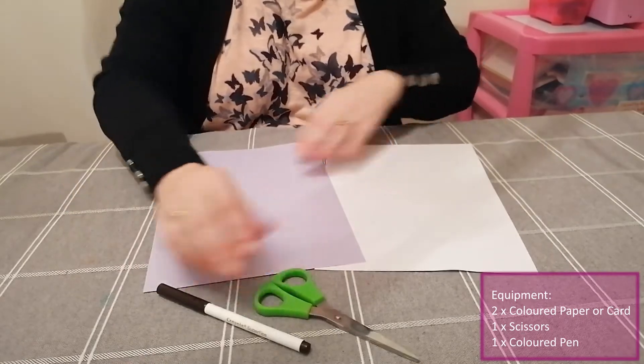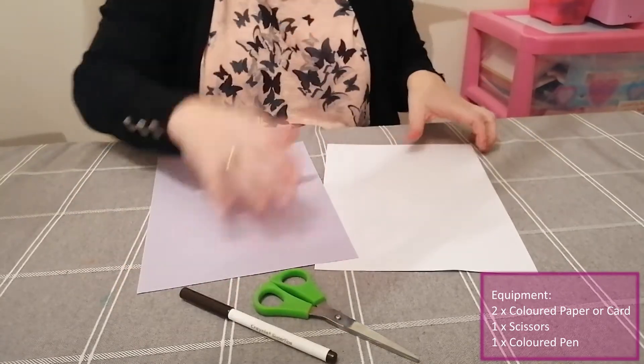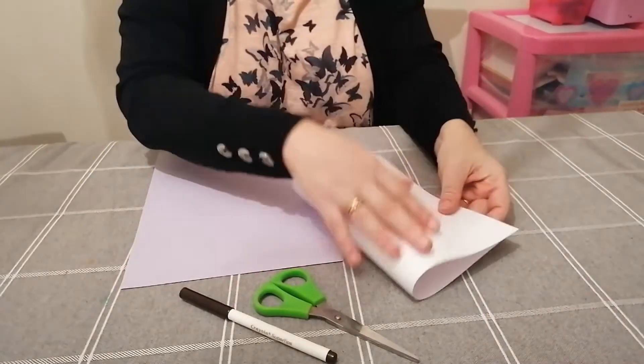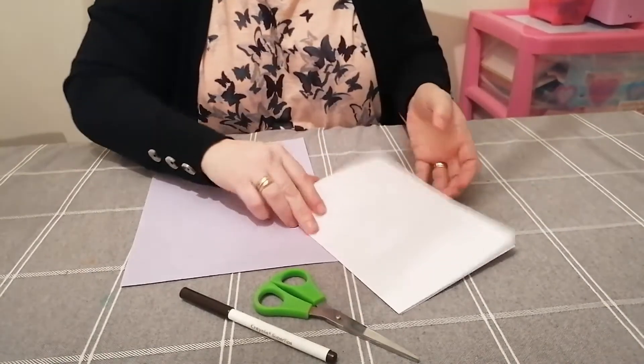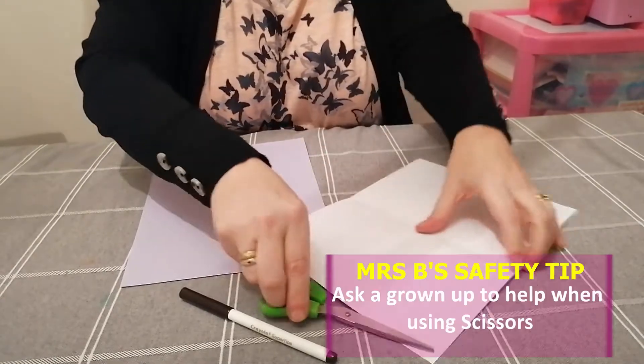First thing we're going to do is fold the card in half. This is going to make our bingo cards, and we're going to snip that in half.